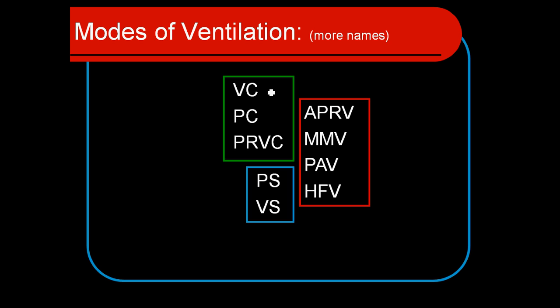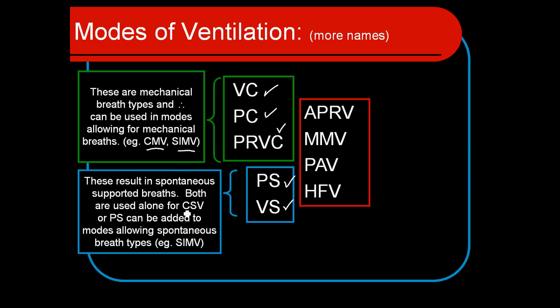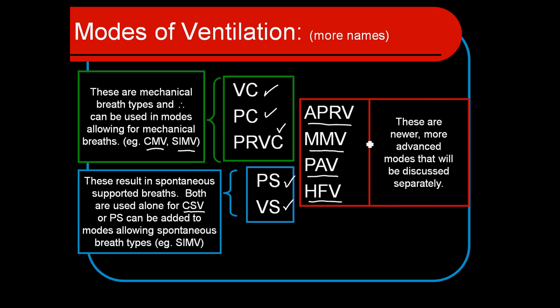The main modes of ventilation are volume control and pressure control, and we've also got pressure regulated volume control. Those are our main modes utilizing the breath types of continuous mandatory ventilation and IMV. We've also been talking about pressure support and volume support, which are our modes for continuous spontaneous ventilation to augment the spontaneous efforts of breathing patients. Other modes we're going to look at include airway pressure release ventilation, mandatory minute ventilation, proportional assist ventilation, and high frequency ventilation. These modes are very interesting but not used quite as often as some of the other modes.